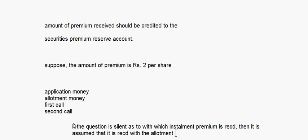If the question specifically says that the premium is received with the application money, then we will put it along with the application money. If it says allotment money, then we will put it in the allotment money. If it doesn't specify anything, we will take it in the allotment money.